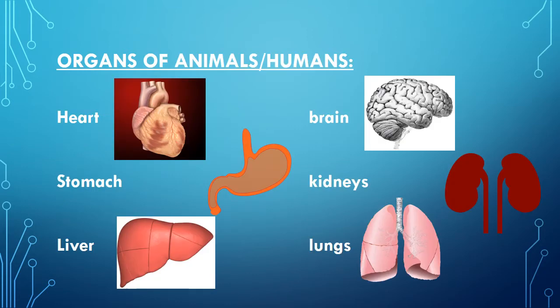Here are some organs of animals and humans. This is a picture of the heart. The heart is known as the pumping organ of our body. It is made up of muscles. Its function is to transport the blood to all parts of our body.